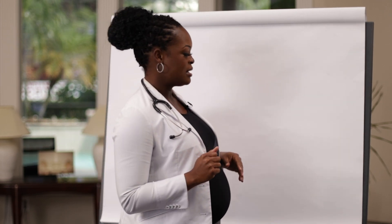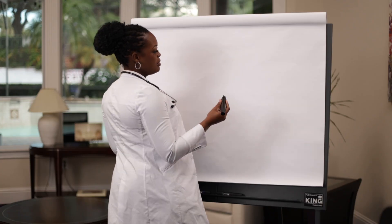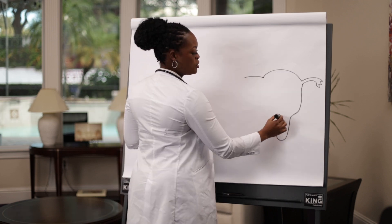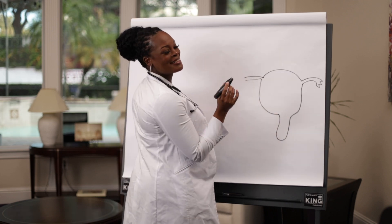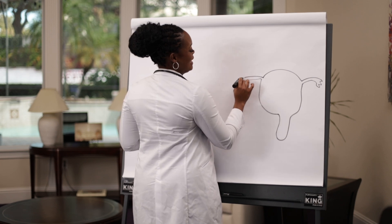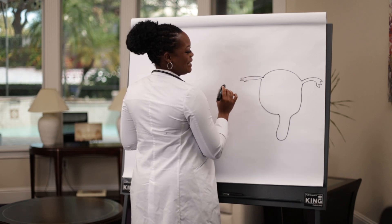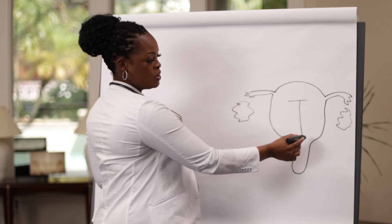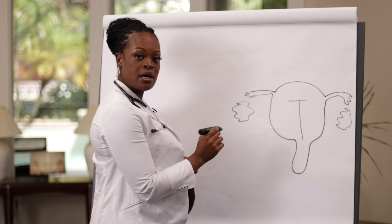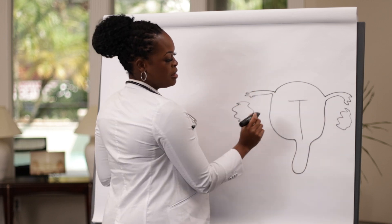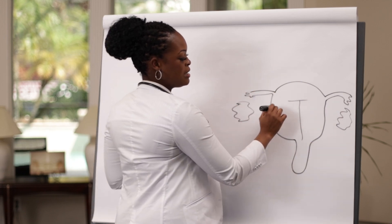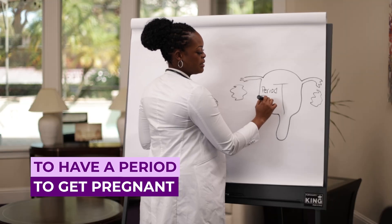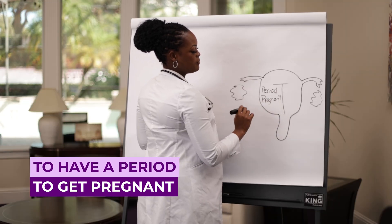So let's take a look at what that looks like. I'm going to draw what your uterus kind of looks like — my artistic version. This is your uterus. The purpose of your uterus is either to have a period, to get pregnant, or to carry a pregnancy.